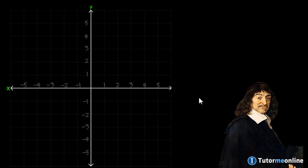On the left, we have what is known as the Cartesian plane. And then on the right, we have this funny-looking gentleman who went by the name of René Descartes, who was the inventor of the Cartesian plane.